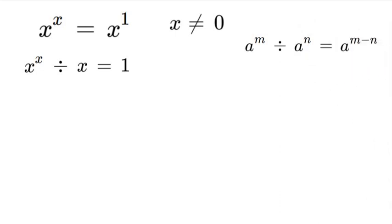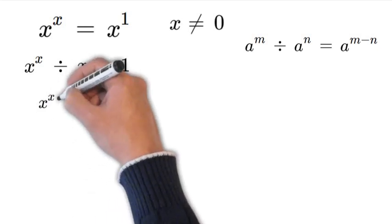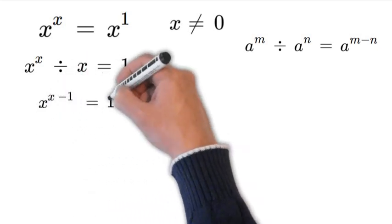If we have a to the m divided by a to the n, it equals a to the m minus n. Therefore we can rewrite again and say that x to the power of x minus 1 is equal to 1.